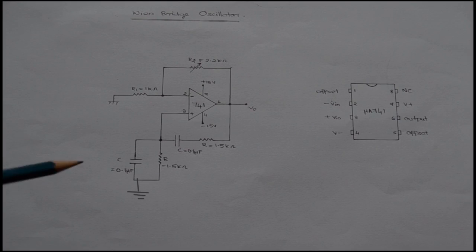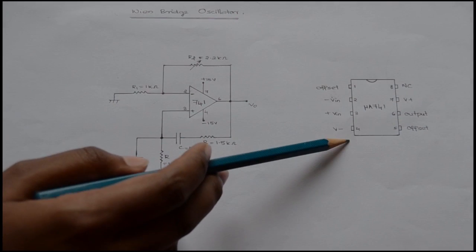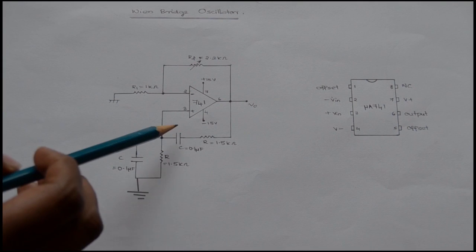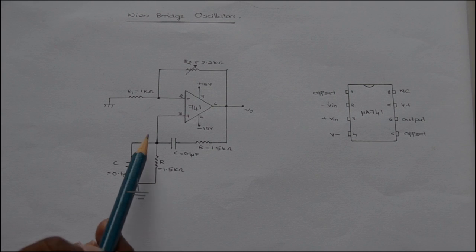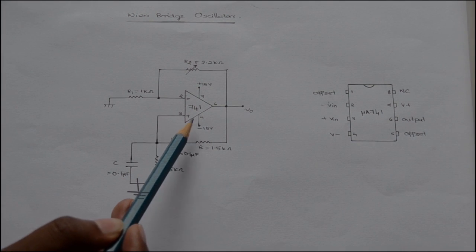Now, this is the circuit of the Wien Bridge Oscillator. The Op-Amp used here is 741 and this is a pin diagram of Op-Amp 741. The circuit mainly consists of the amplifier and the feedback network, as I said earlier. The feedback signal is given to the non-inverting input terminal. Therefore, the amplifier acts as a non-inverting amplifier.